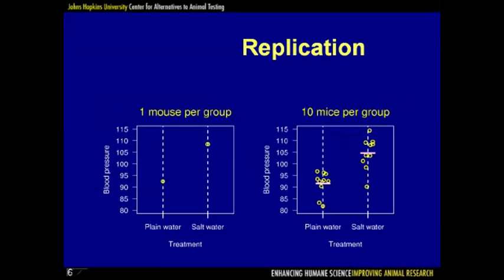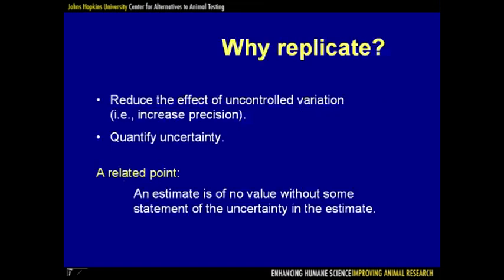The third principle is replication. In the panel on the left, we have the blood pressure of 1 mouse fed plain water and 1 mouse fed salt water. In the panel on the right, we have the blood pressure for 10 mice in each group. The experiment on the right is considerably better. By measuring the blood pressure on several mice, we get a more precise estimate of the effect of salt water on blood pressure, reducing the effect of uncontrolled variation.